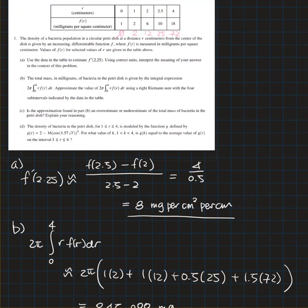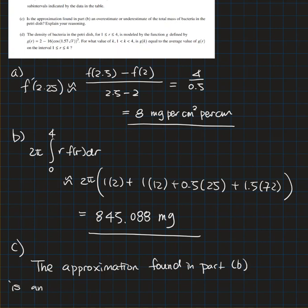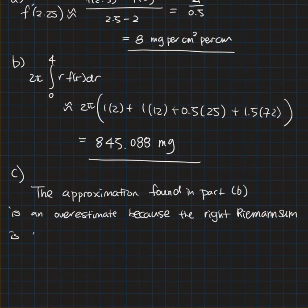Number c: is the approximation found in part b an overestimate or underestimate of total mass of bacteria in the petri dish? Since f of r is increasing, which is given in the question, the approximation found in part b is an overestimate because the right Riemann sum is used and the function f is increasing.